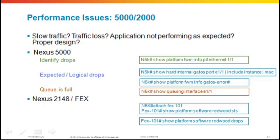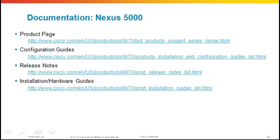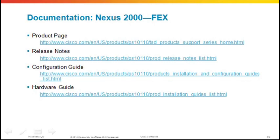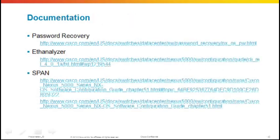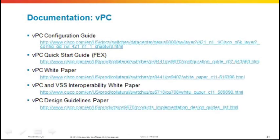In conclusion, here are documentation pointers. For the 5K: the product page, configuration guides, release notes, and installation hardware guides. For the FEX: key documentation for your reference. Other topics covered today include password recovery, Etheranalyzer, and SPAN. For VPC: the configuration guide, quick start guide — highly recommended if you're new to VPC — the white paper, and the design paper, which covers all designs discussed today and guides you to the right design for your business needs.